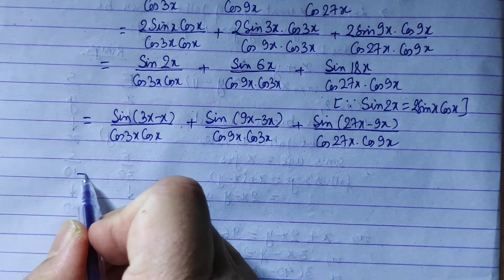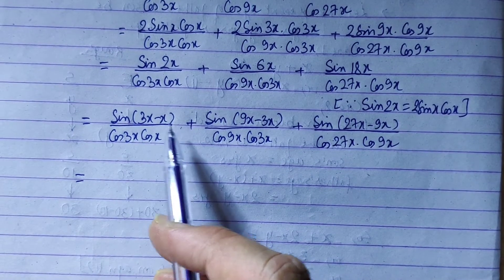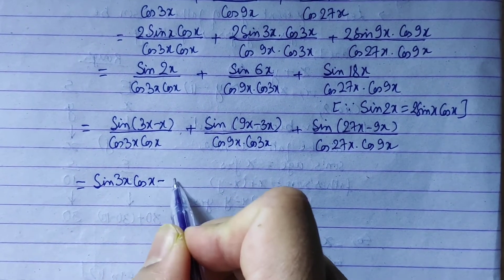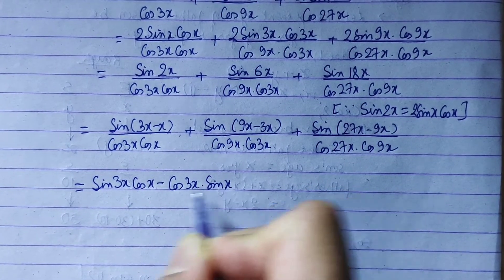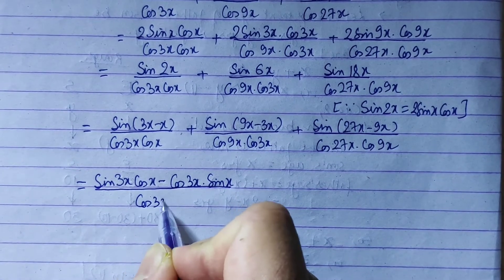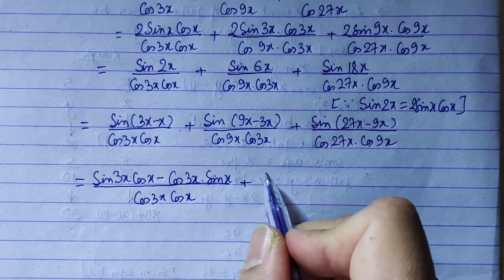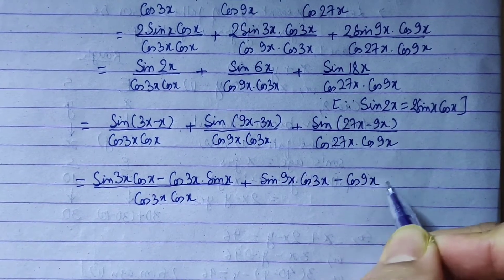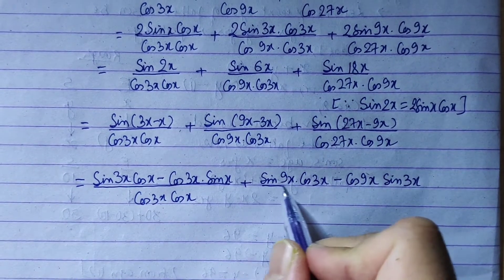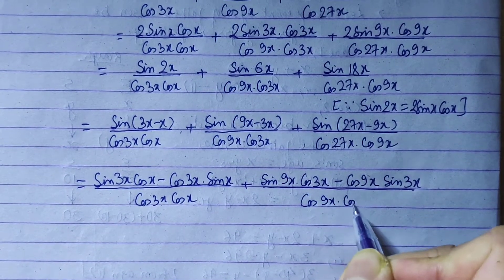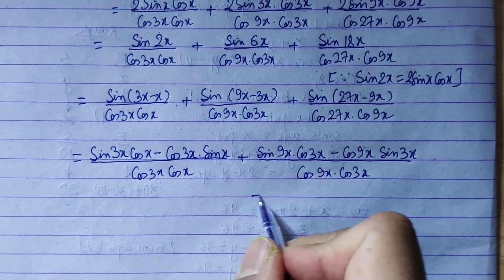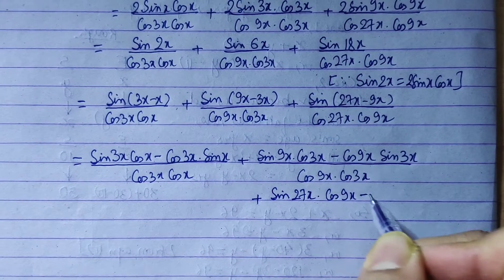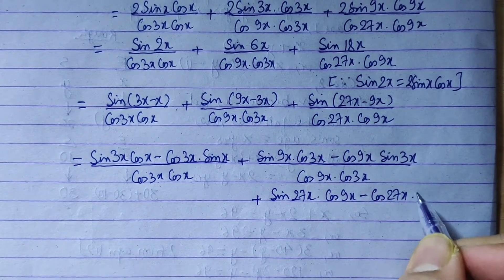Now let us apply the identity sin(A minus B) equals sinA cosB minus cosA sinB. The first fraction's denominator is cos3x cosx. For the second fraction: sin9x cos3x minus cos9x sin3x, all over cos9x into cos3x. The third fraction is sin27x into cos9x minus cos27x into sin9x.